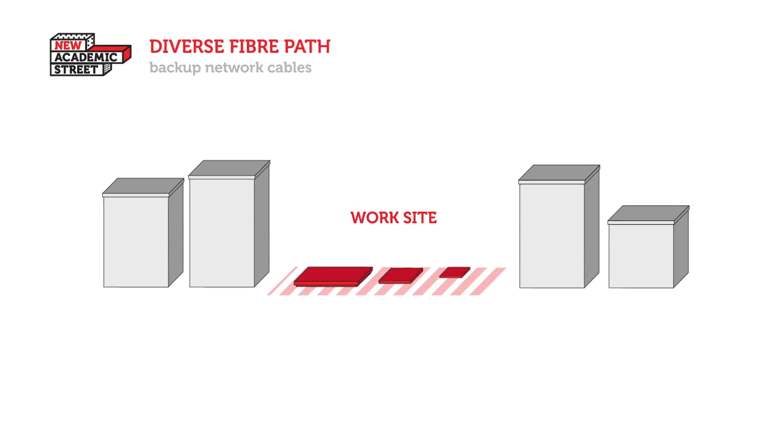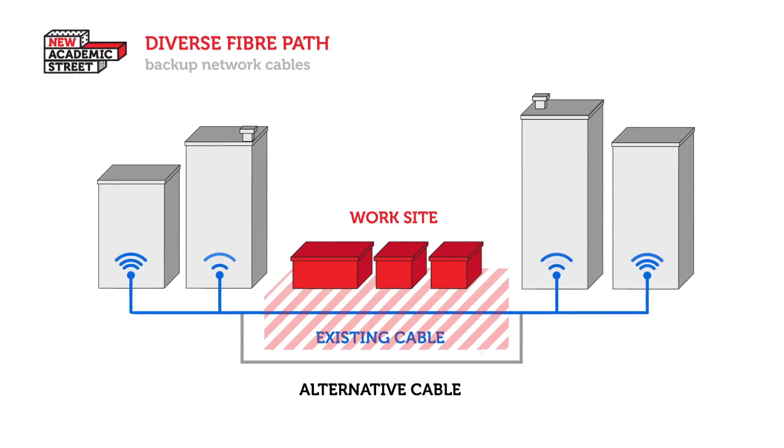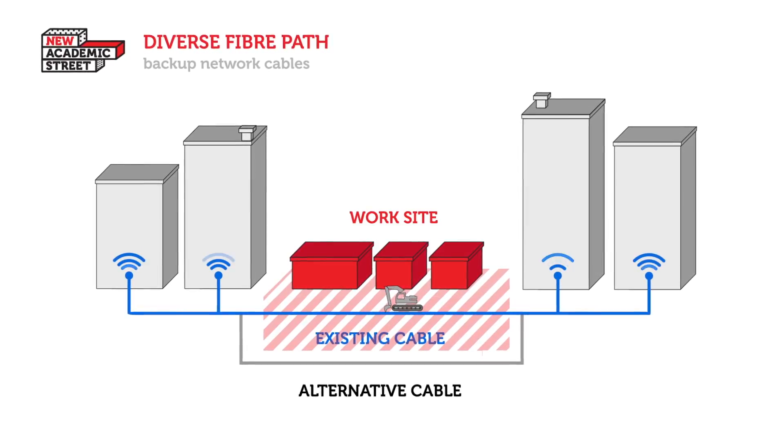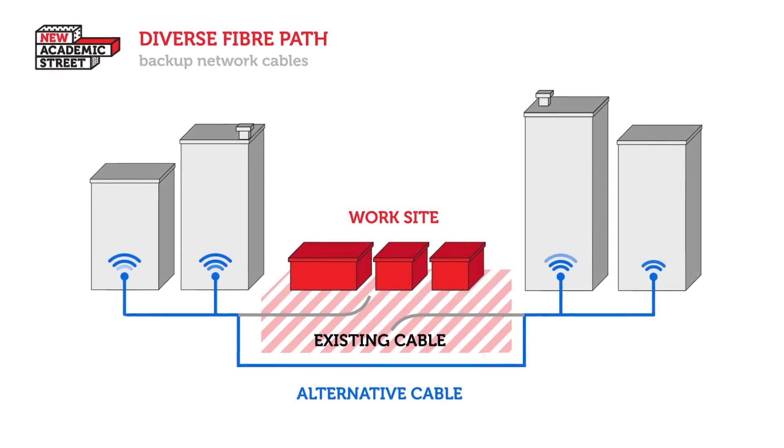That call was dependent on whether there was a sufficient level of comfort that the cables wouldn't be impacted. If they were, we had a plan. The number one mitigation was for IT to have in place what's called diverse fibre paths — essentially, if you accidentally impact one part of the network, another part of it comes live, meaning no or minimal impact to the university. These diverse fibre paths were being built at the same time as the NAS project was due to start in earnest.